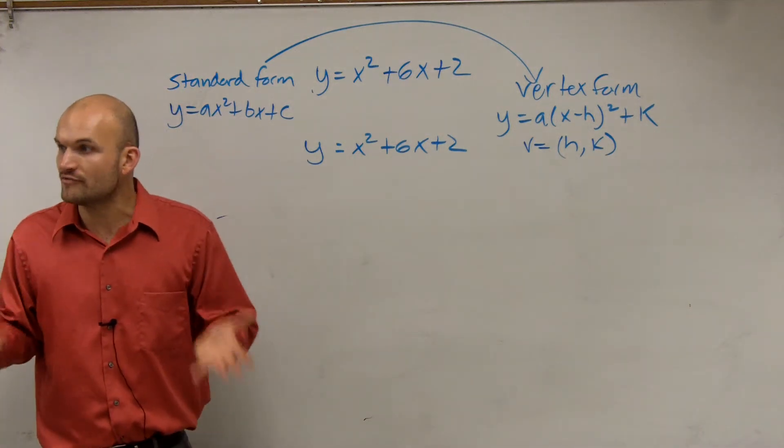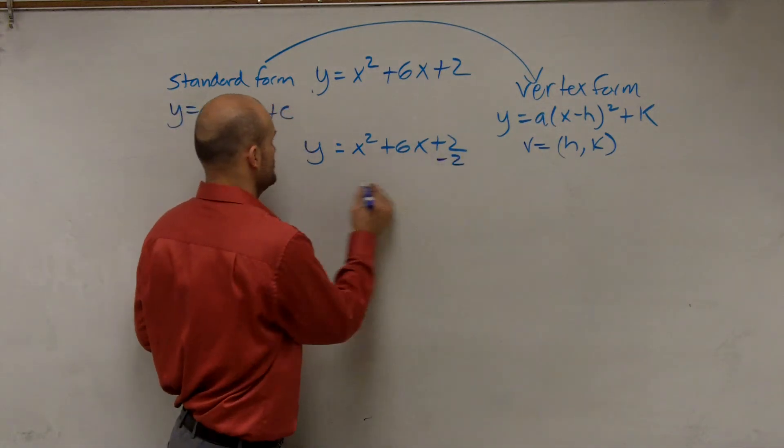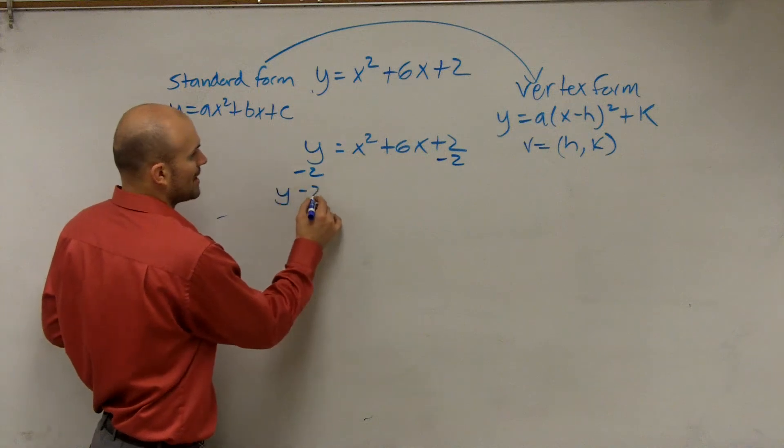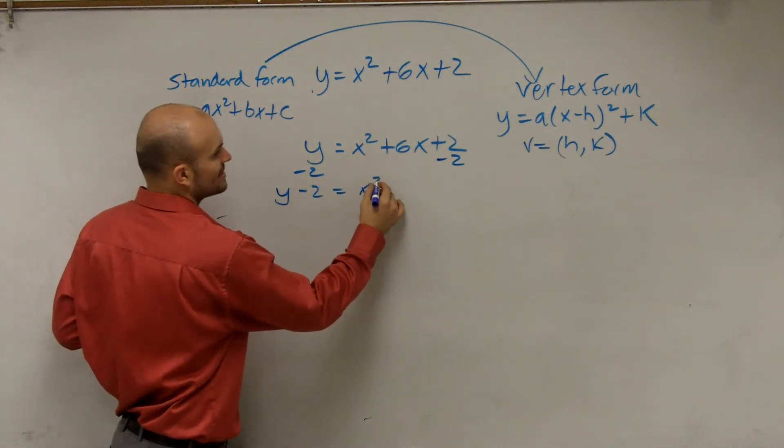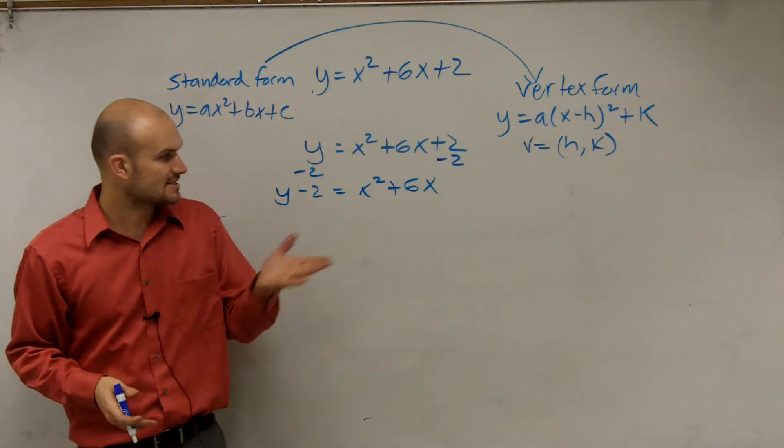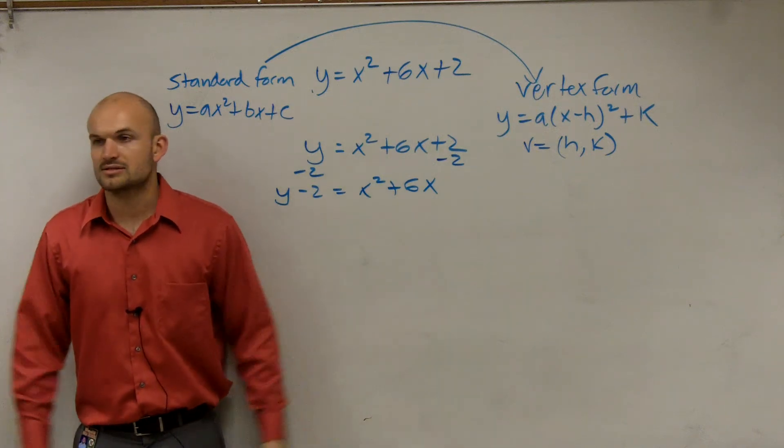First step, isolate your variables. We still need to isolate the x's. So we subtract the 2 onto the other side. But rather than there being a 0 there, now it's just going to be y minus 2 equals x squared plus 6x. That's step number 1. Does everybody see how I isolated my x variables? Just get down to the other side.